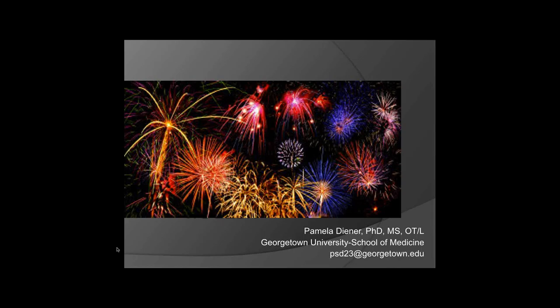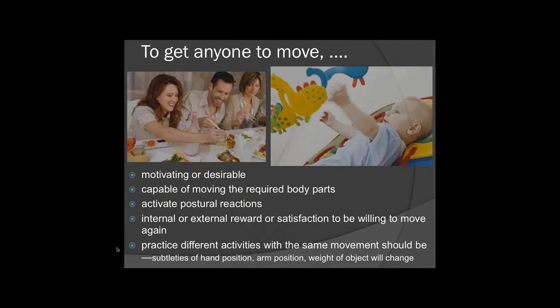Hopefully you're beginning to do some movement. To get anyone to move, one of the things we need to provide is a motivating and desirable stimulus. If you provide that, somebody wants to move an arm towards it, whatever body part needs to move. You have to provide something motivating, something the person wants, and they have to be able to actually move their body parts. When you move a body part such as your arm forward, you automatically activate postural reactions — the reactions that keep your trunk erect so you can reach forward and not fall on your face. You also have to achieve some end result — some internal reward, perhaps food in your mouth, or an external reward, like touching a mobile.